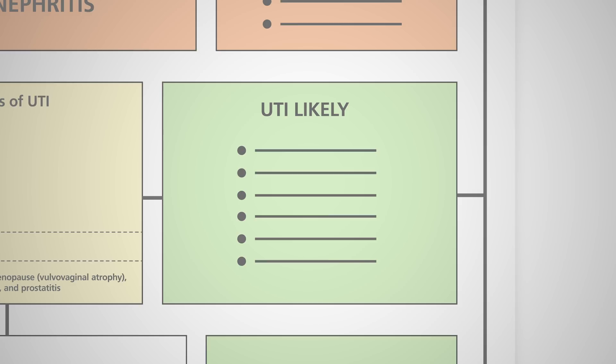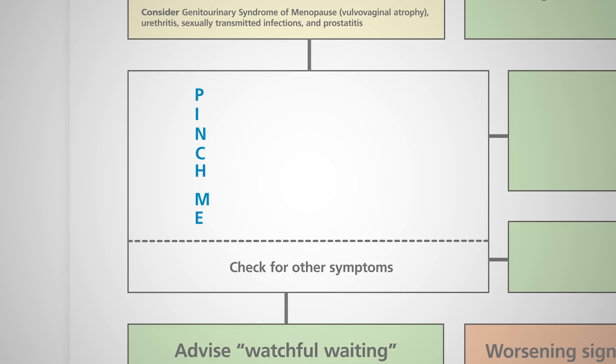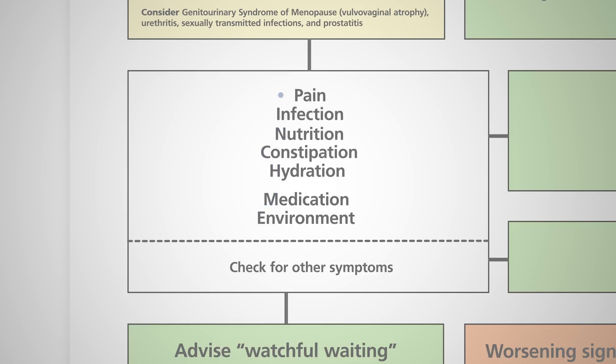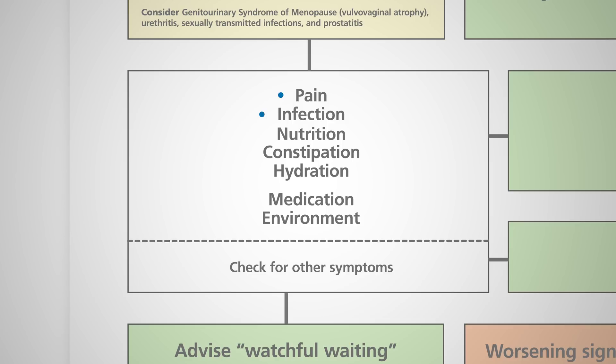There are many reasons for new or worsening confusion in older people. PINCH ME can be a useful reminder for other potential causes of confusion, including pain, other infections, poor nutritional status, constipation, poor hydration, and medication or environment changes. Check for signs of other infections, for example chest, gastrointestinal or skin infections, if a UTI is less likely.